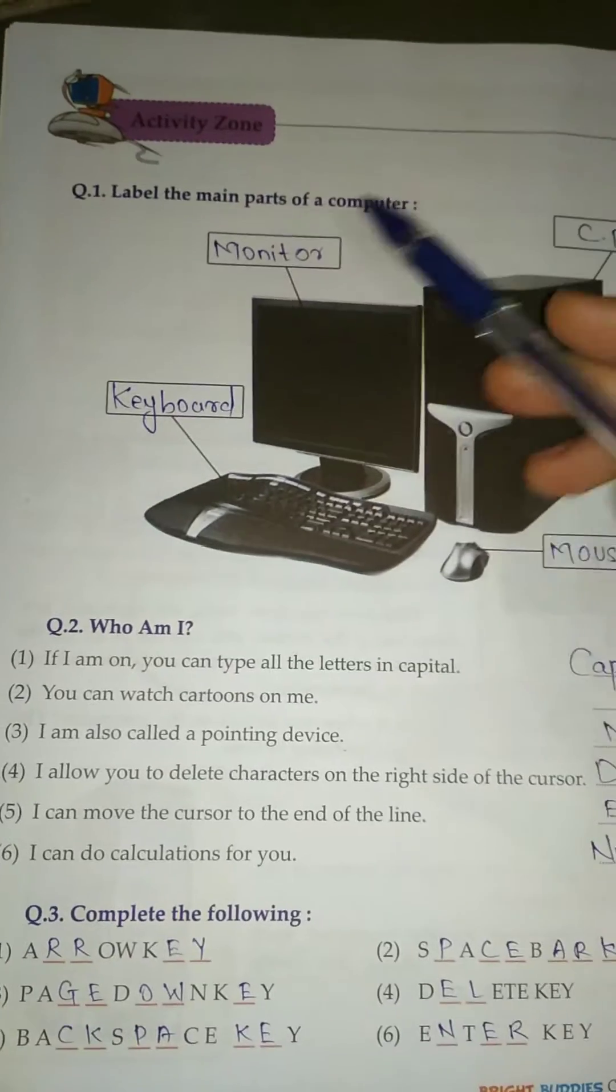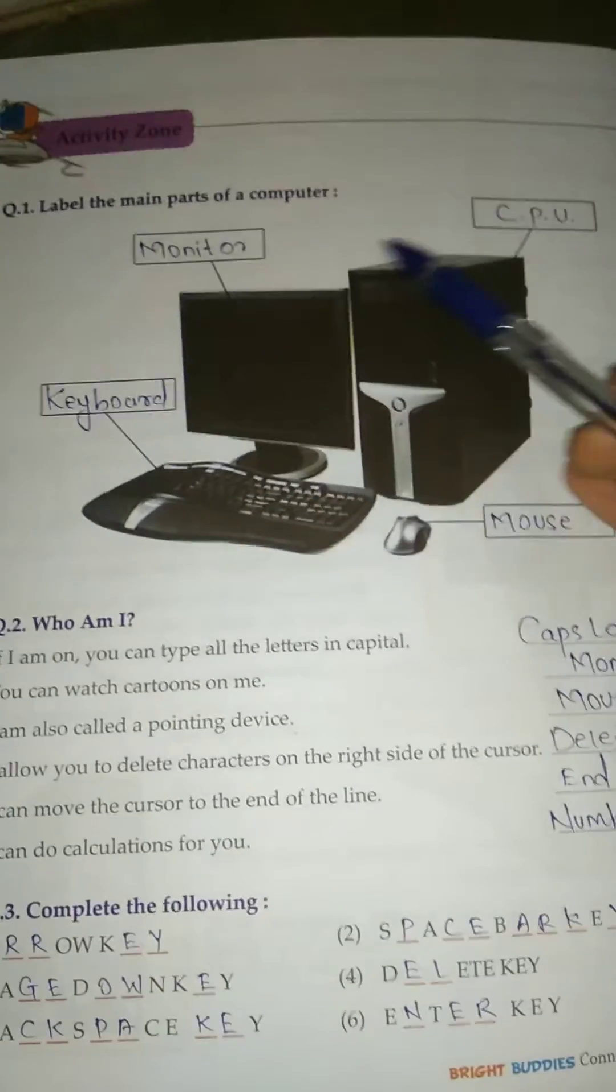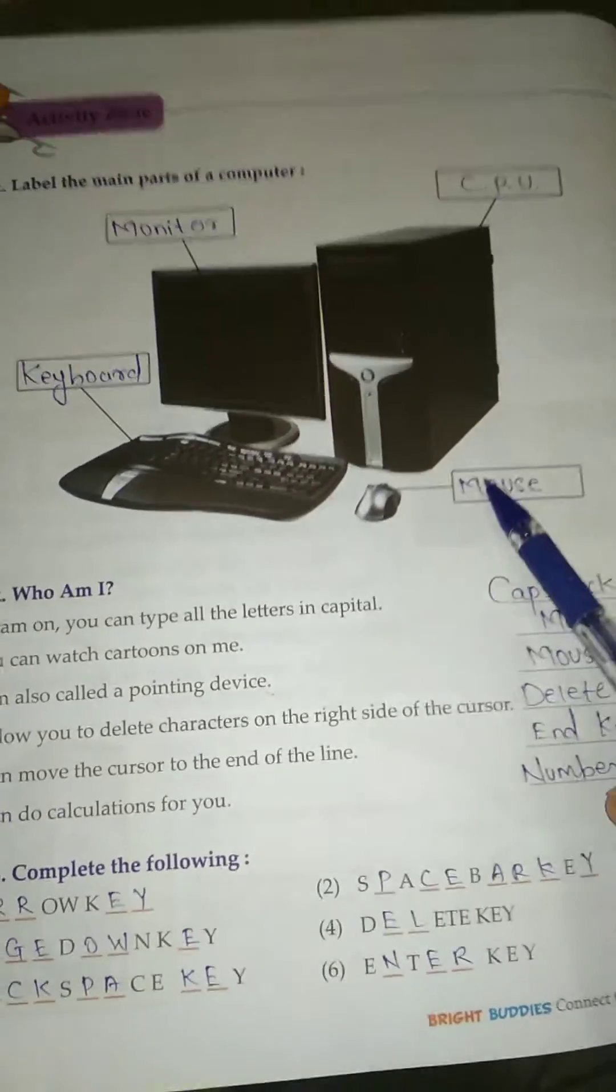Activity Zone, Question Number 1: Label the main parts of a computer. Monitor, Keyboard, CPU, Mouse.